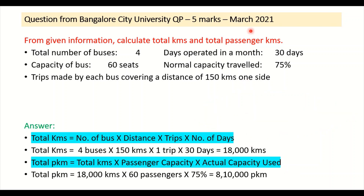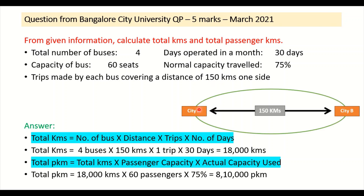Similarly, the next question is from the March 2021 question paper, same Bangalore City University. There are only 60 seats and 150 kilometers one side — city A to city B. So one trip is taken, 30 days, giving 18,000 total kilometers and total passenger kilometers of 8 lakh 10 thousand.